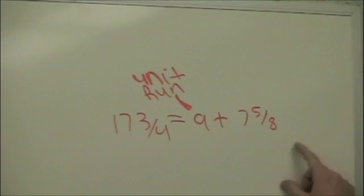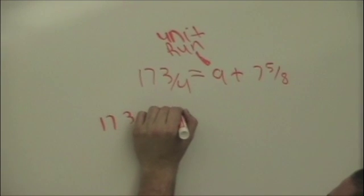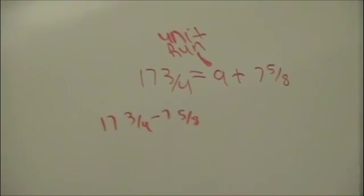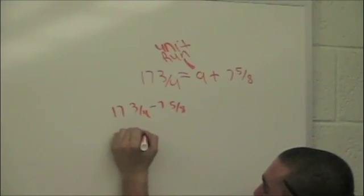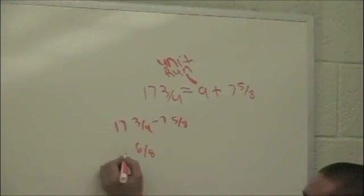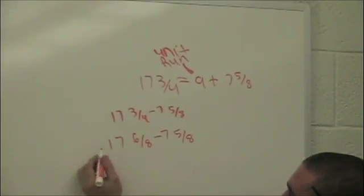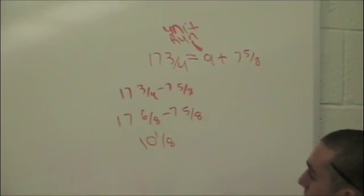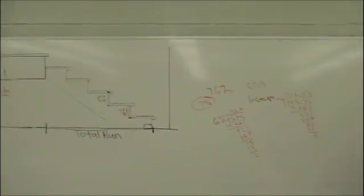You subtract 7 and 5/8 from 17 and 3/4. Since you can't subtract two different types of fractions, you have to convert the 3/4 into 6/8. So 17 minus 7 is 10, and 6 minus 5 is 1, giving you 10 and 1/8 left. This number is now our unit run and 7 and 5/8 is our unit rise.